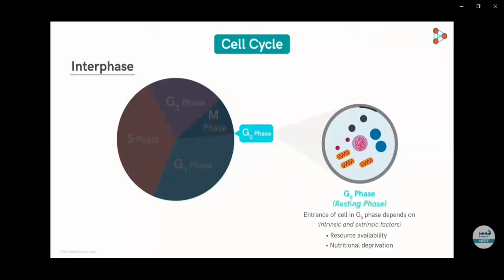When there will be no nutrition, a nutrient-deprived cell will not divide and it will rest in G0 phase, and this is called resting phase.